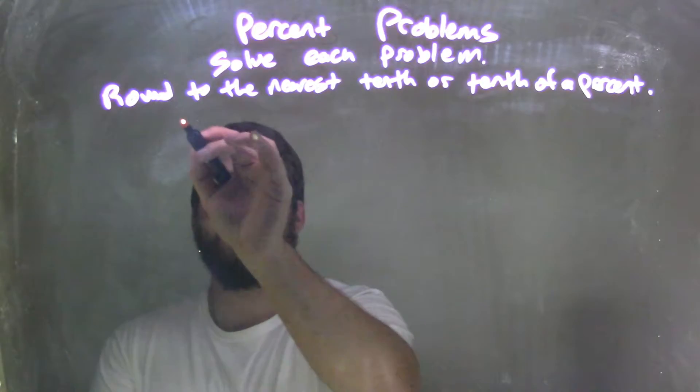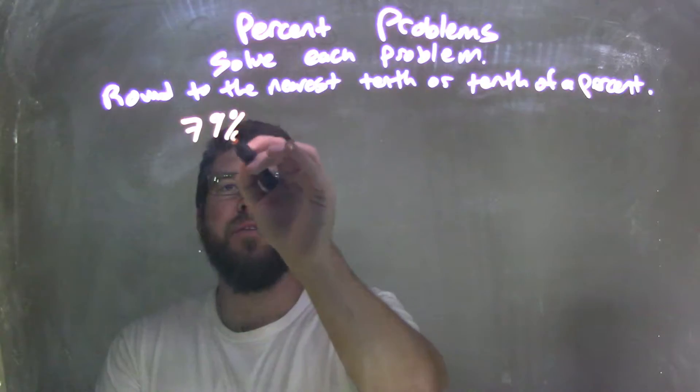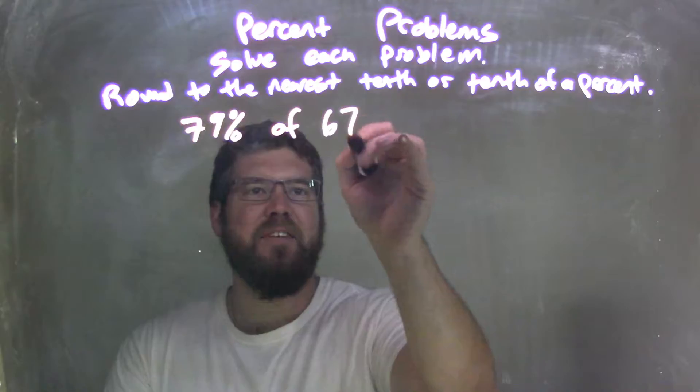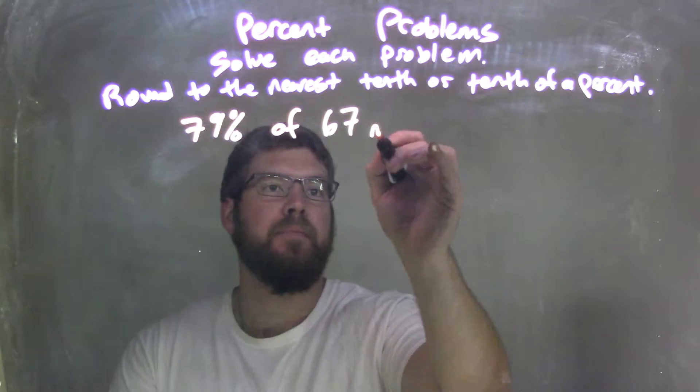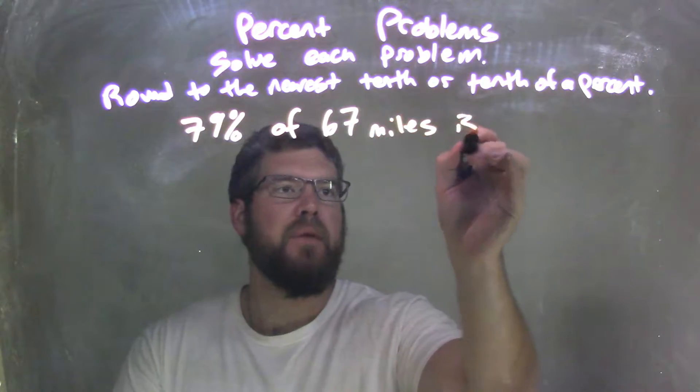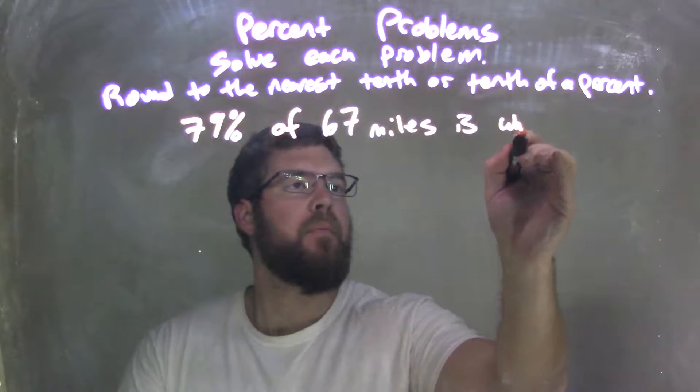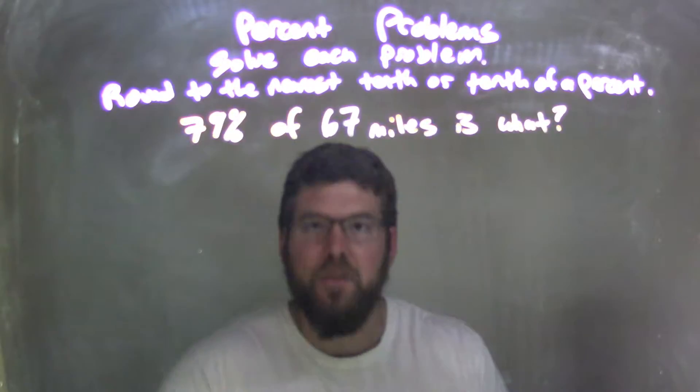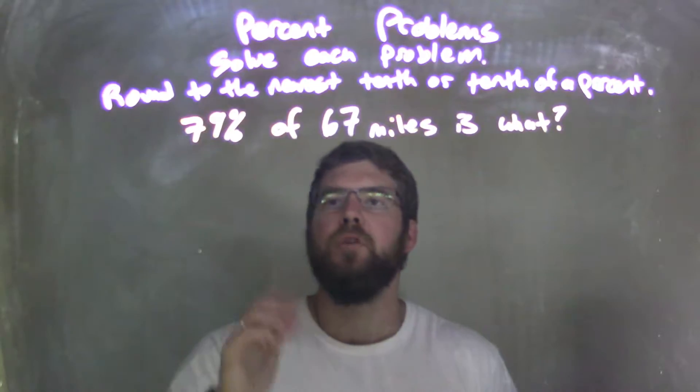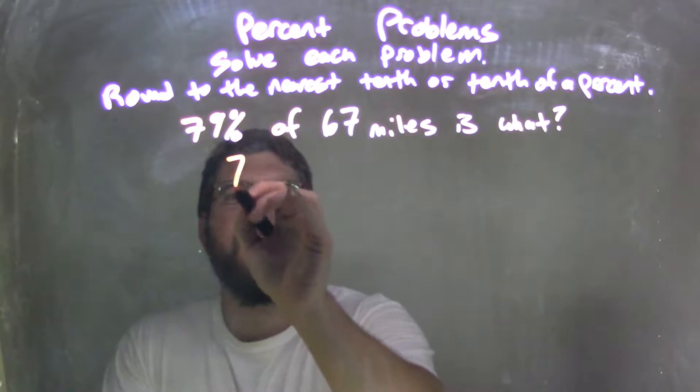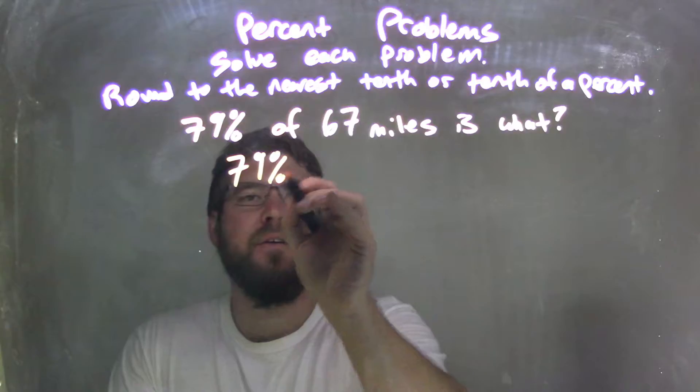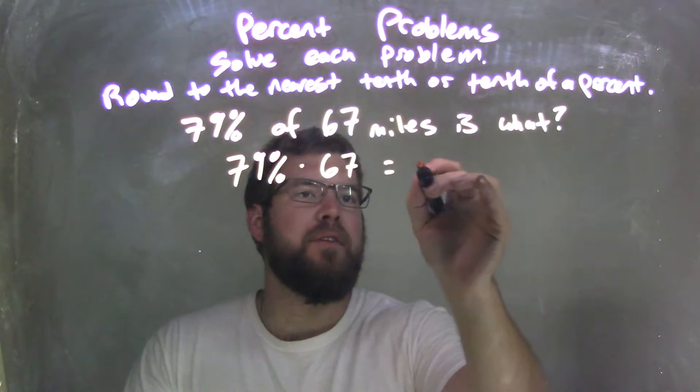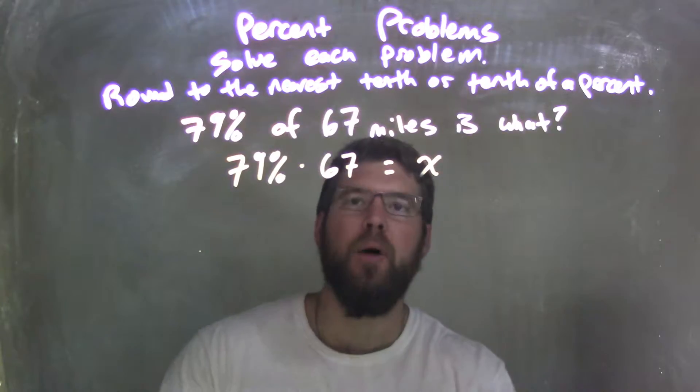So if I was given this problem, 79% of 67 miles is what? Let's see if I'm going to write this into an equation. 79% of, multiplied by 67, is what? That's a variable x there. Now we're in miles.